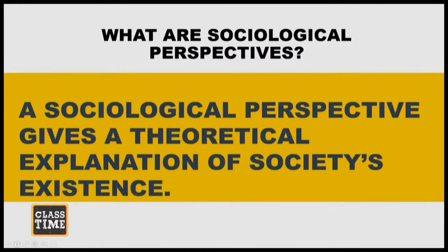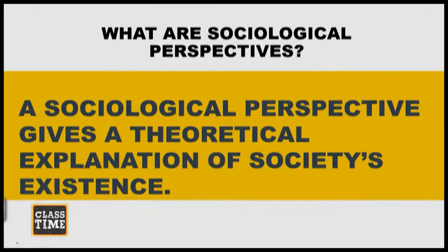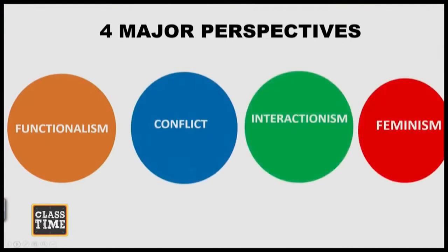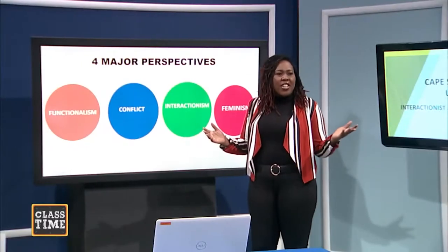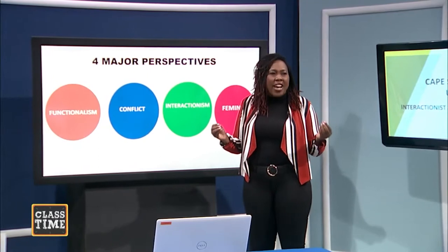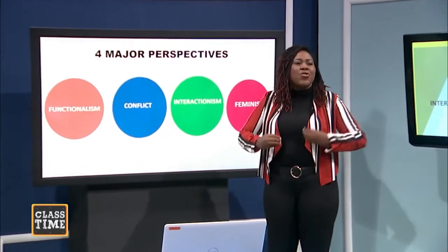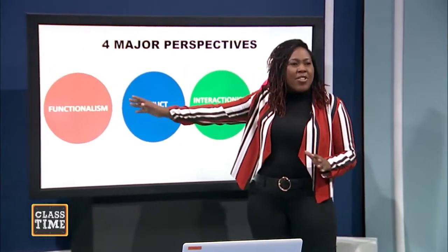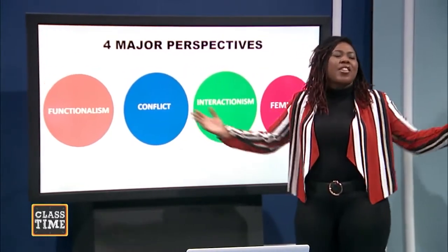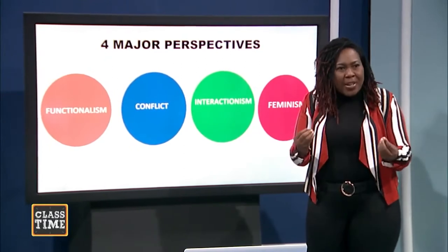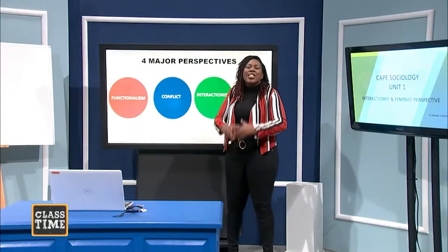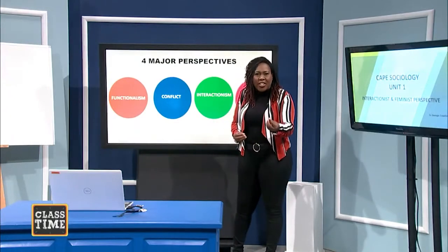We have been looking at the various perspectives. We looked at functionalism. So we looked at the four major perspectives — the functionalist perspective. Who is a big functionalist? Always ask yourself that. Once you get to a reading, you're studying a new class, always try to recap. Who's a big functionalist? Emile Durkheim. What do they compare society to? The human body. How do they explain society's existence? They say that society has institutions that are functional.